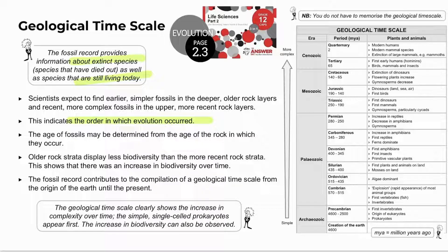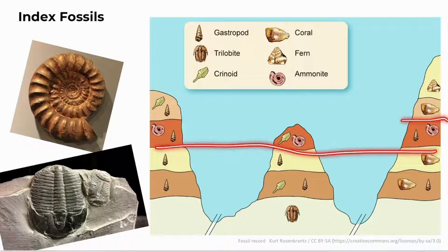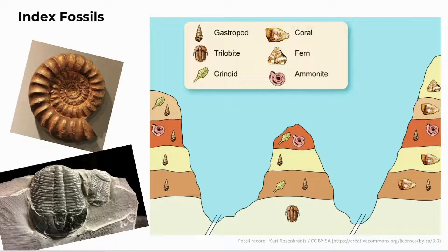These trends are not always supported by the fossil record. The age of fossils can be determined from the age of the rock in which they occur, and rock strata are also dated by the presence of particular fossils associated with them. Index fossils or indicator fossils are used to distinguish one rock layer from another. Examples include ammonites, ferns, corals, gastropods, trilobites, and crinoids — organisms that lived in a specific geological age, were widespread, abundant, and short-lived, making them useful for dating rock layers.